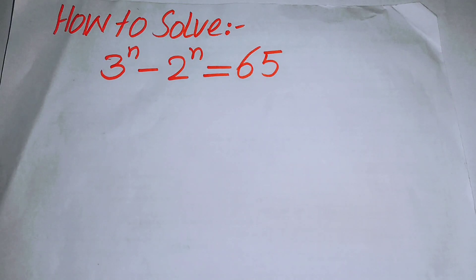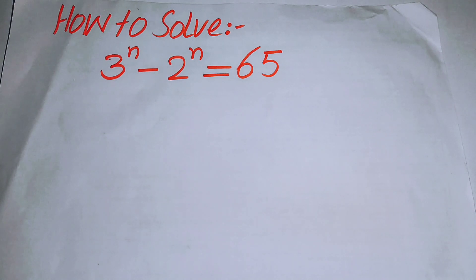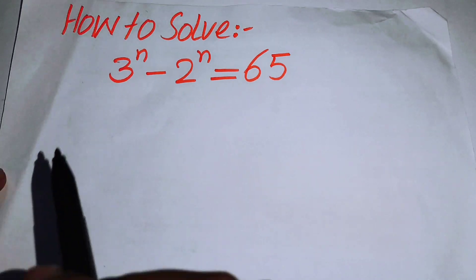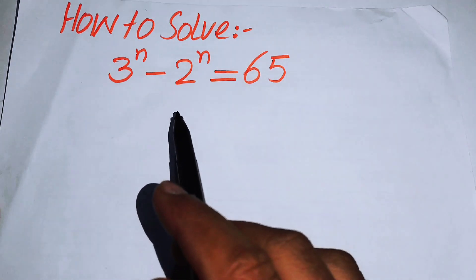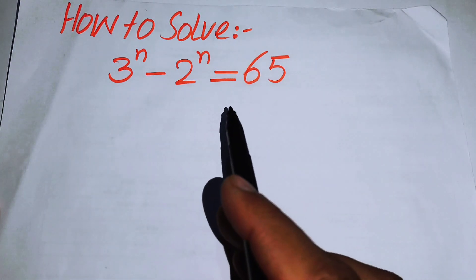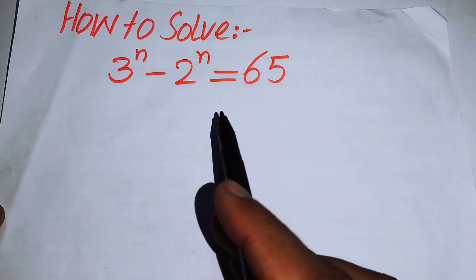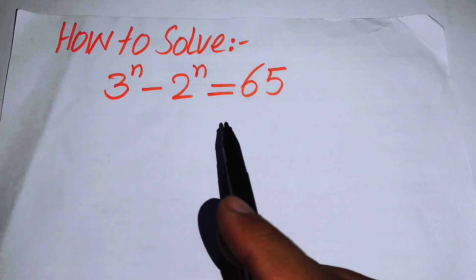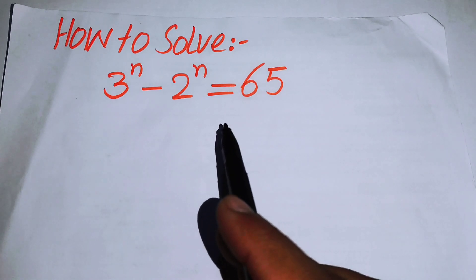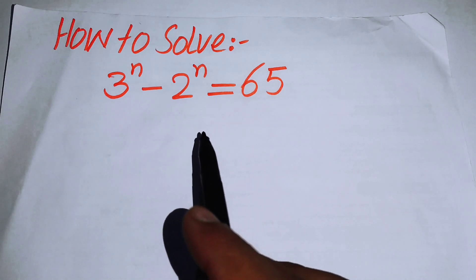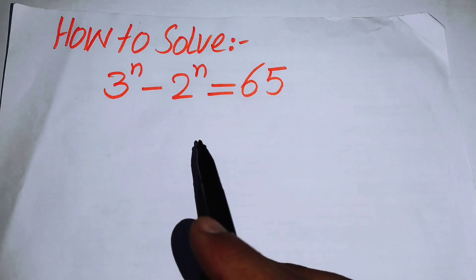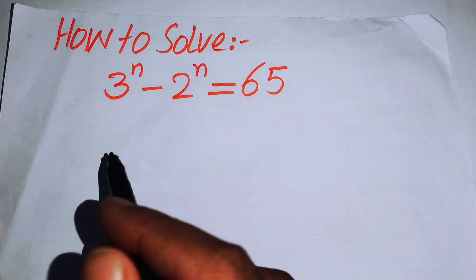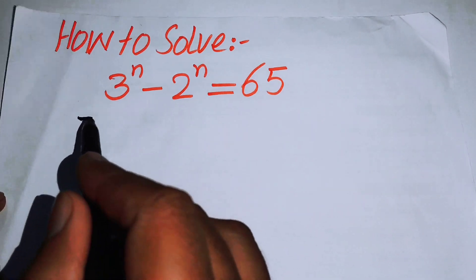Hello everyone, welcome back to the Map of Mathematics. In this video we are going to solve this nice algebraic problem: 3 to the power of n minus 2 to the power of n equals 65. We will solve this for the values of n using a unique technique, and I hope you will like this method.